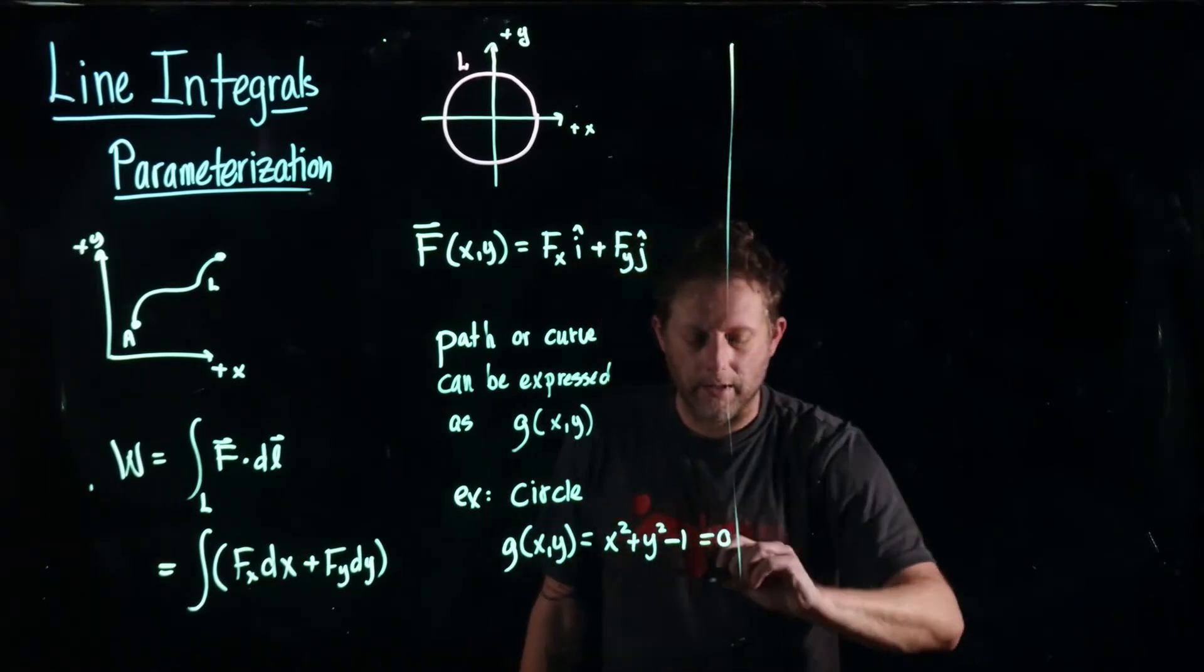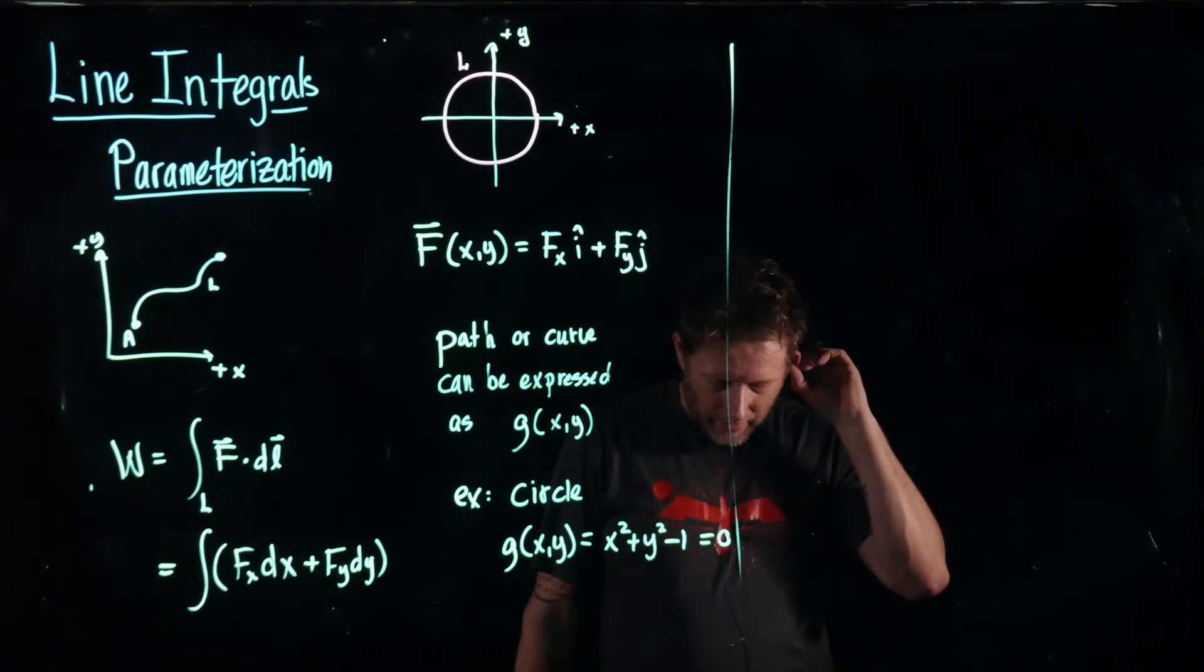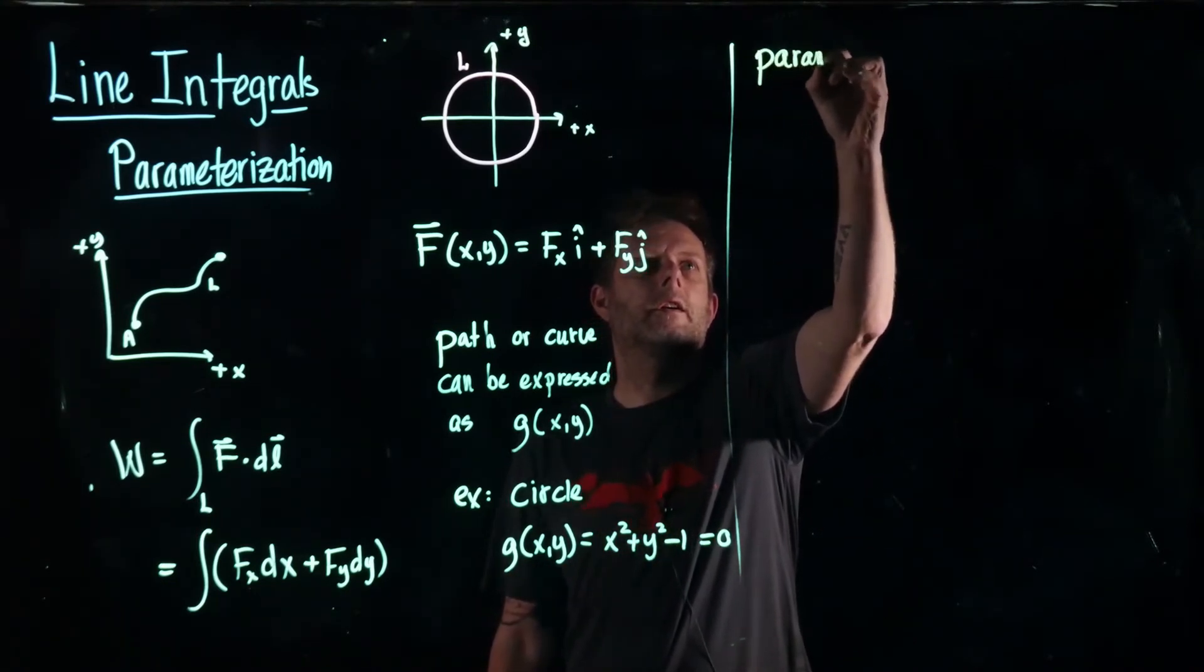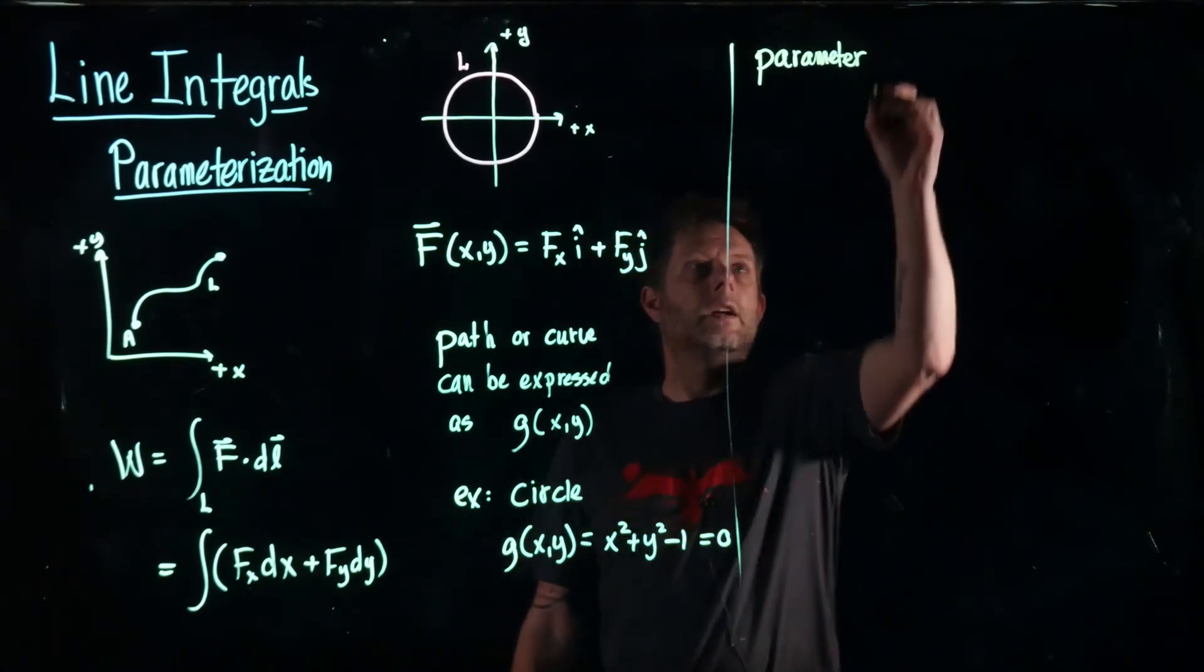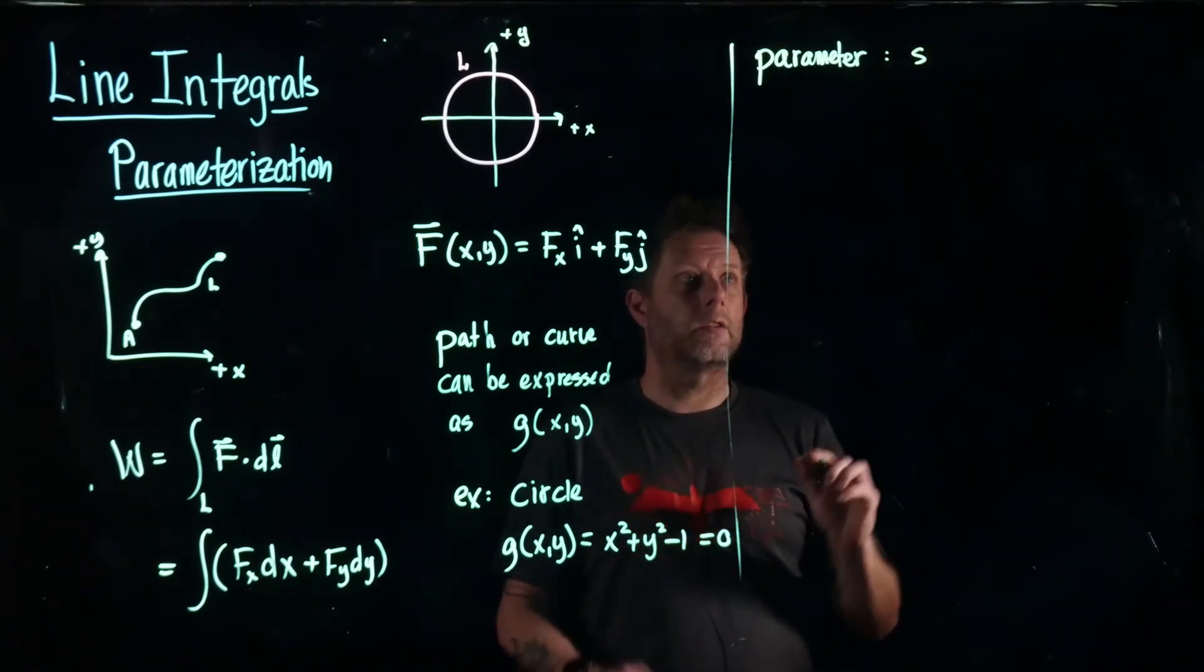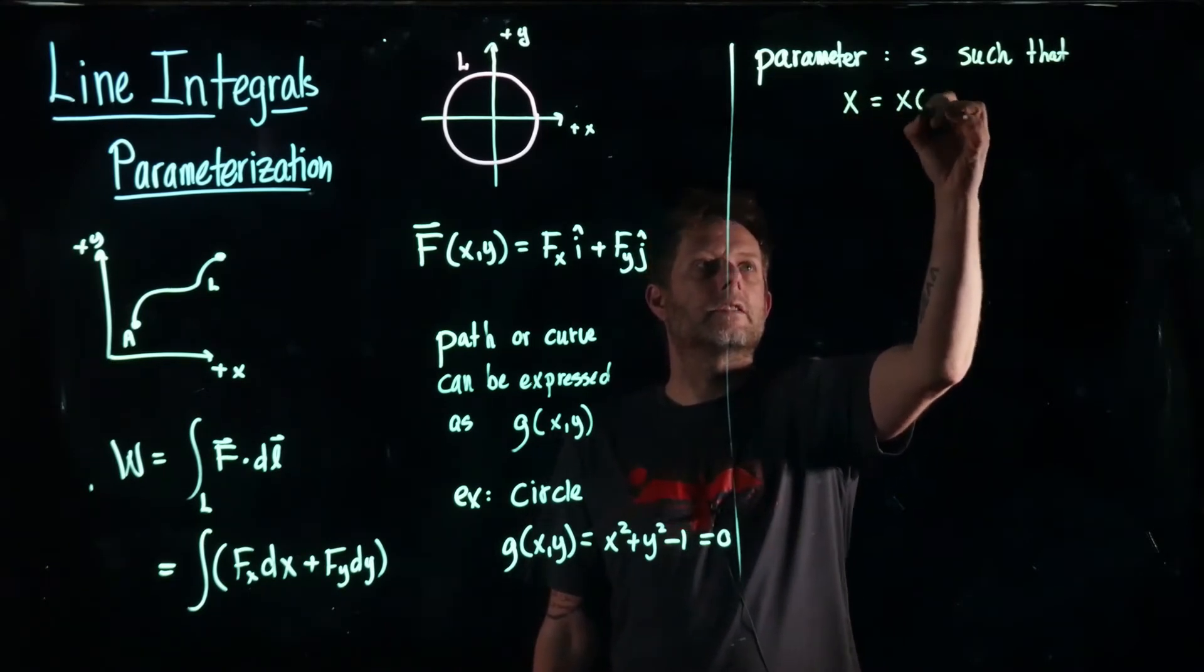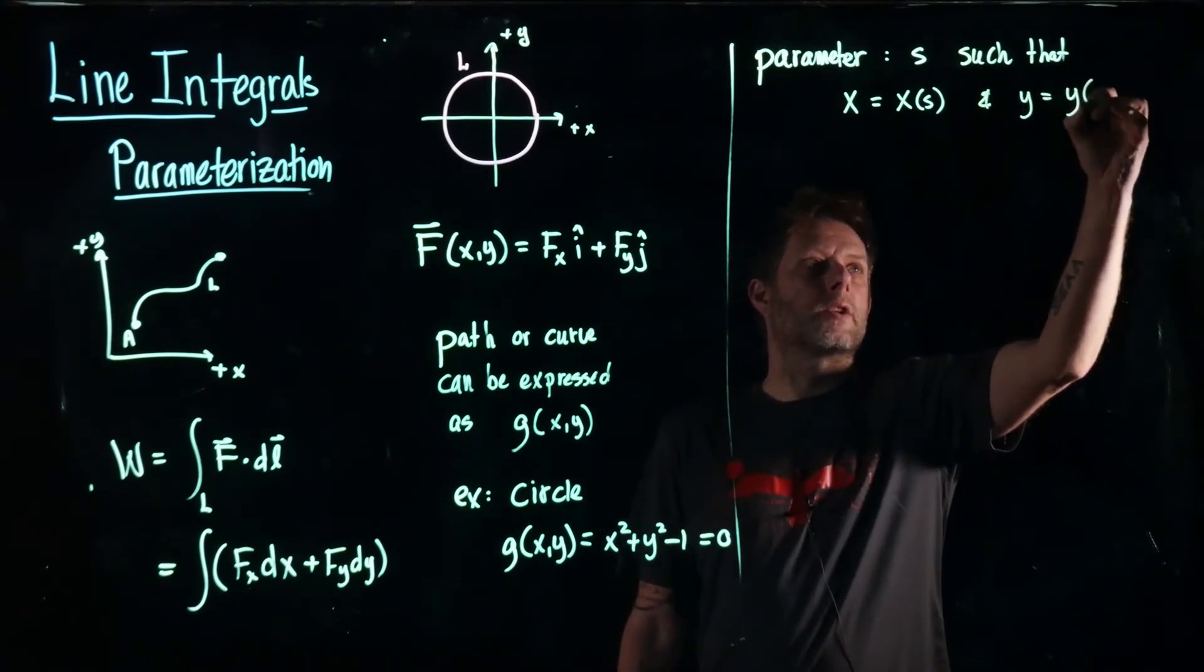The next step is to say that there's a parameter, that's why we call it parameterization, we call it a parameter that describes this system. So we're going to call that parameter s. It's just a random variable for now. Such that we now have x can be expressed in terms of that variable and y can also be expressed in terms of that variable.